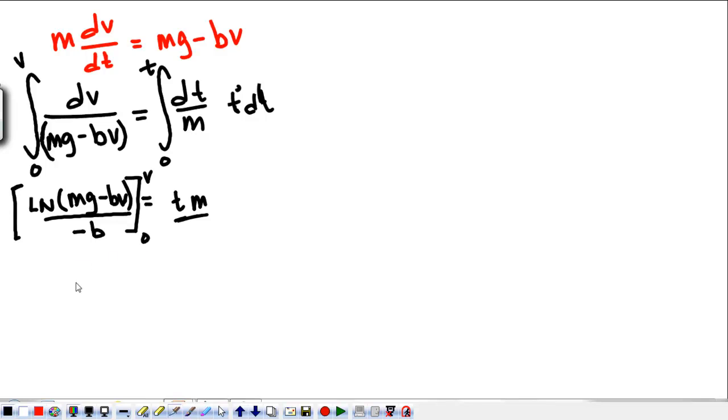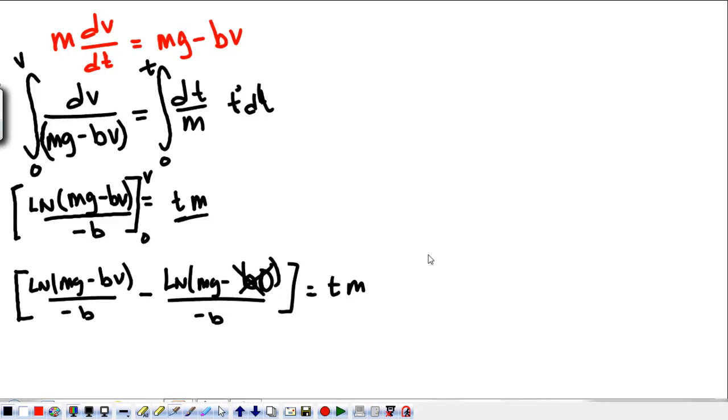Now, what this means is I'm going to take all of that, I'm going to plug in v. So, natural log of mg minus bv over negative b minus that whole value evaluated at zero. And that's equal to t times m. We didn't change that side of the equation. So all that happens when I plug zero in is that goes away. So, I've got, let's get rid of the negative b. Oh, I did that wrong. Sorry. It's not t times m. I apologize. It's t over m.